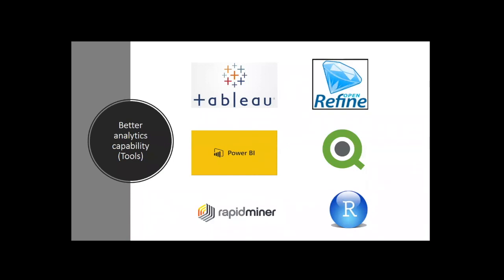In recent years there's been interest outside of libraries in data science and machine learning, and this has resulted in a set of general tools that are easy to use — for example, Tableau, Power BI, and Qlik. These are almost point-and-click visualization software tools, and they've been used by librarians as well. Other examples include OpenRefine, which many librarians use to clean data. On the more cutting-edge side, there are open source tools like RapidMiner that allow you to do machine learning, and R, which is a programming language for data cleaning, machine learning, and various data tasks.